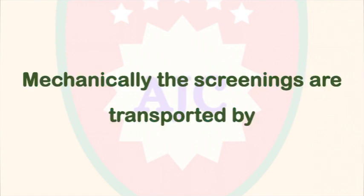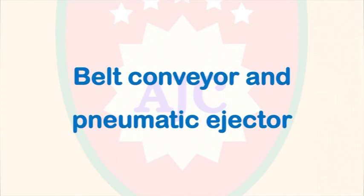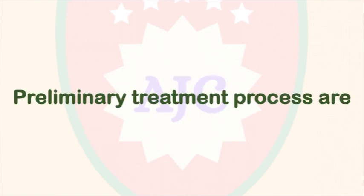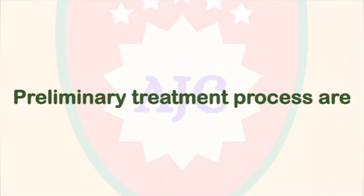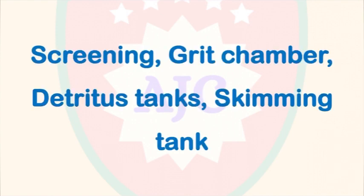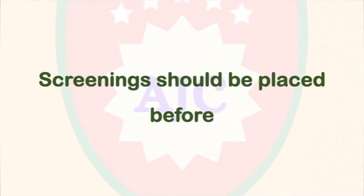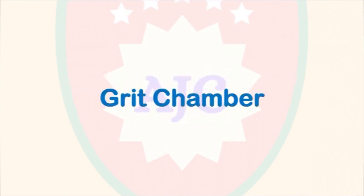Mechanically, screened material is transported away from the screens. The screening process removes waste material, and a belt conveyor and pneumatic ejector are used to transfer the material. Screening is classified as a preliminary treatment process.